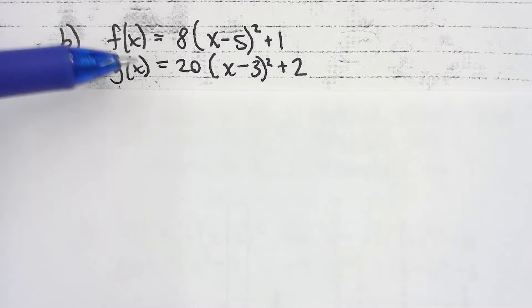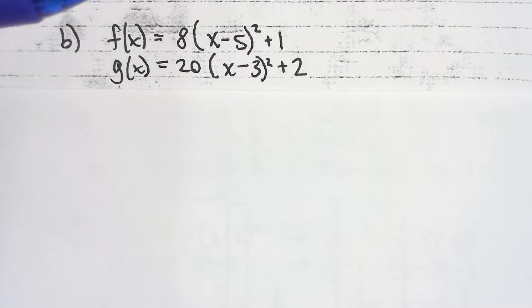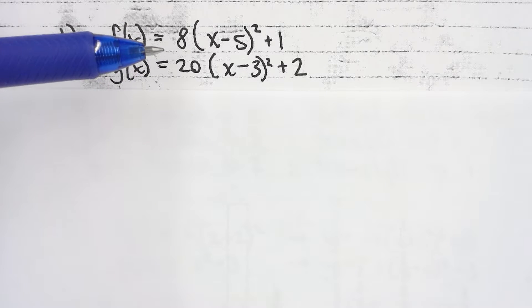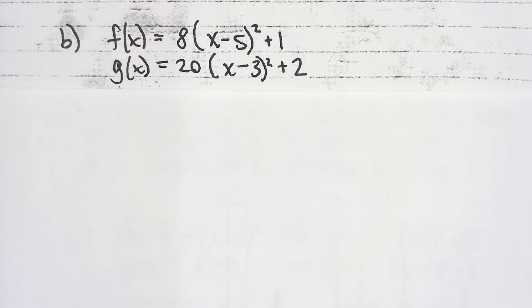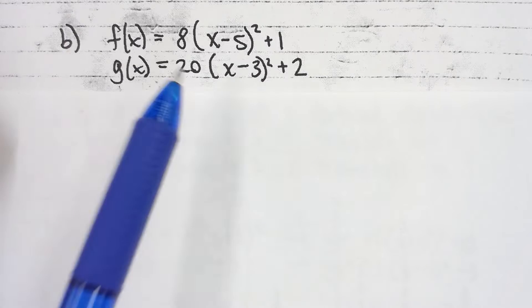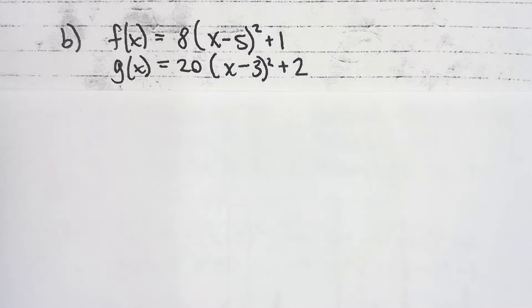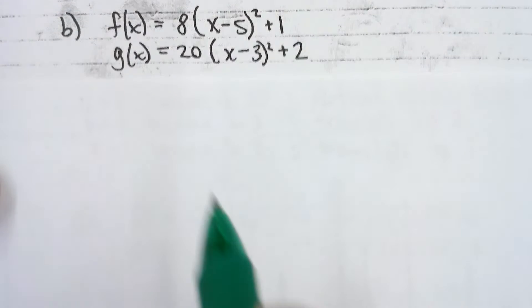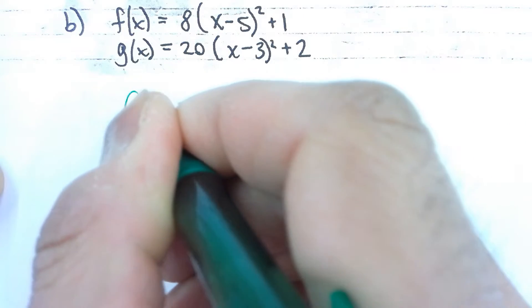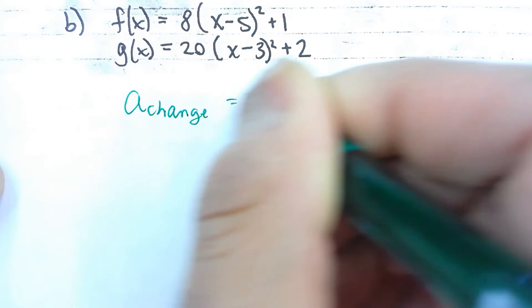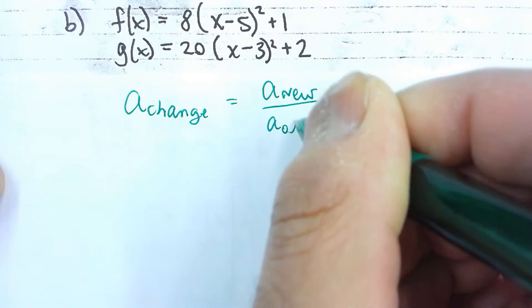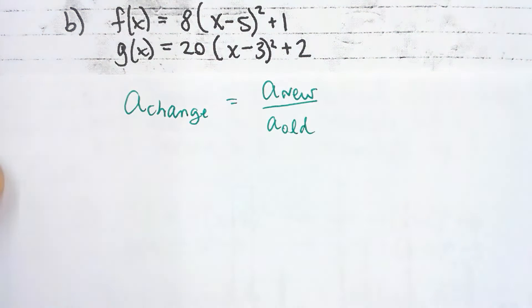Let's talk about a. We're turning it from an 8 to a 20 — we can clearly see we're increasing it. When you increase your a, you're stretching it vertically. The question is: by how much? It's not by 12. To turn an 8 into a 20 by multiplication, you multiply by 2.5 — or 5 over 2. To figure out the change in a, take your new a and divide it by the old a: 20 divided by 8 gives 2.5.